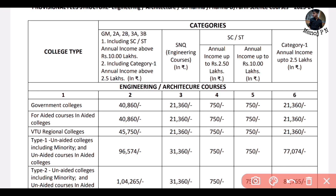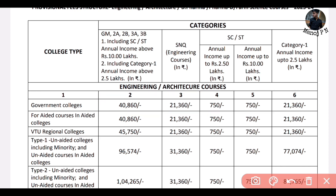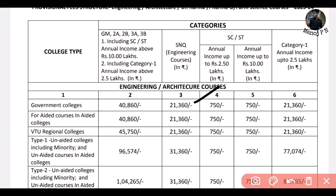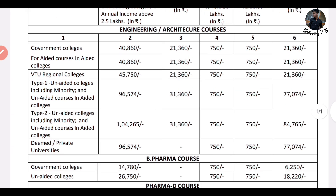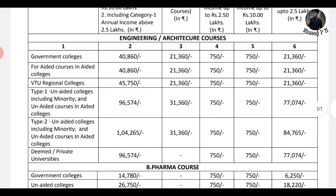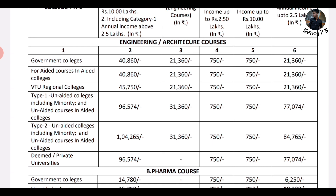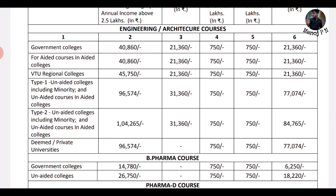The fees for architecture courses are different for different colleges. For the SNQ quota, it is Rs. 250; for up to 10 lakh, it is Rs. 750; and the categories are Rs. 250 for the SNQ quota fee structure. Next, for aided college — aided course in aided college — this is almost like a lot of government colleges. Next, for VTU Regional Colleges, these are Rs. 500 and Rs. 45,750. For SNQ quota it is Rs. 150; for SCST it is Rs. 750; and for Category 1 it is Rs. 21,360.